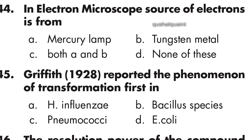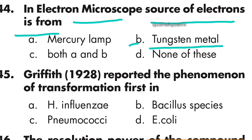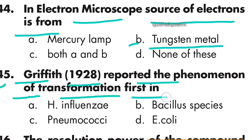Question number 44: In an electron microscope, the source of electrons is from tungsten metal. Option B is right — tungsten metal. Question number 45: Griffith in 1928 first reported the phenomenon of transformation in Pneumococcus. Option C is right — Pneumococcus.